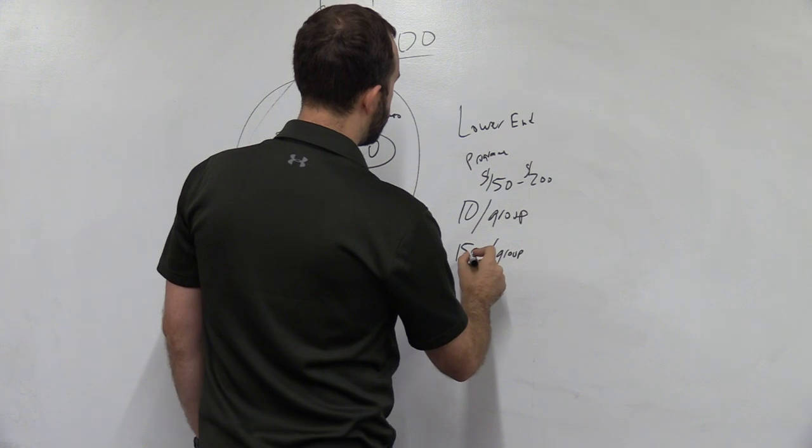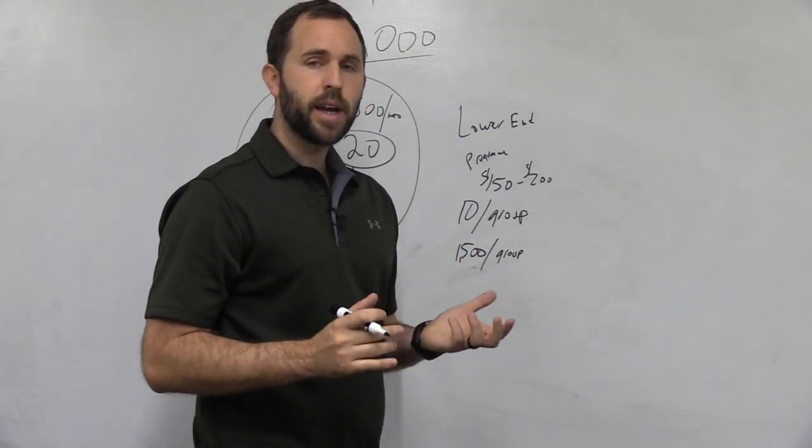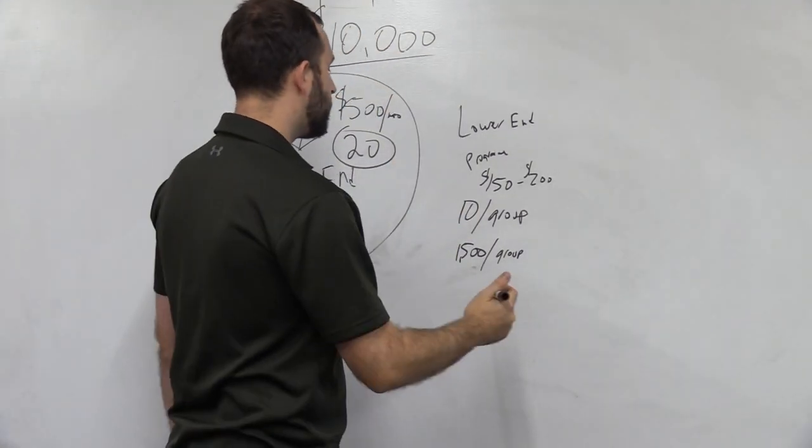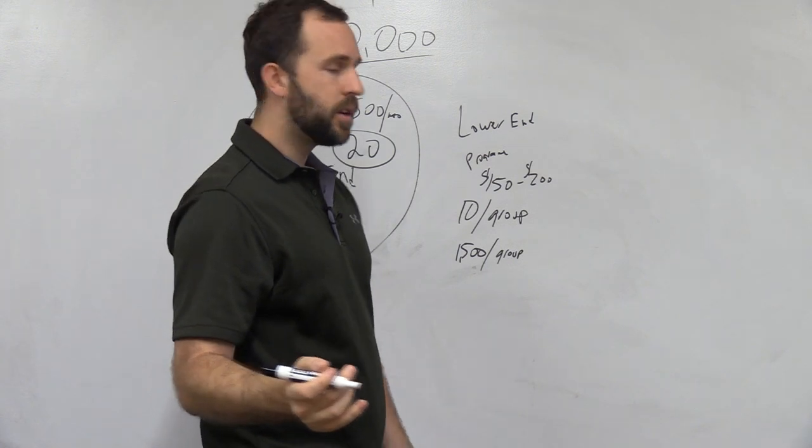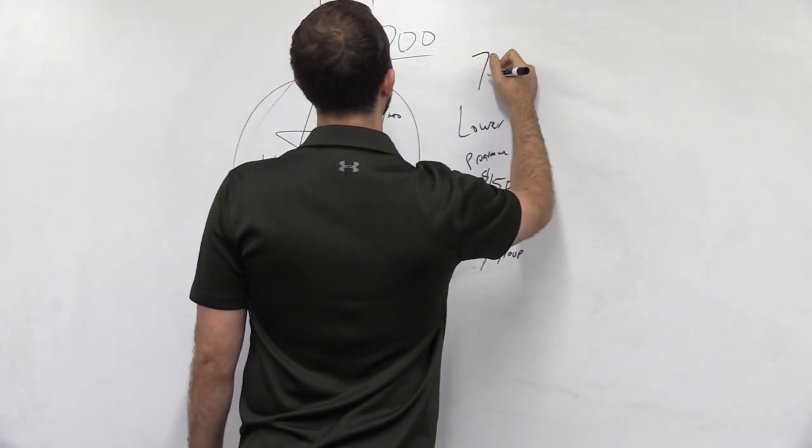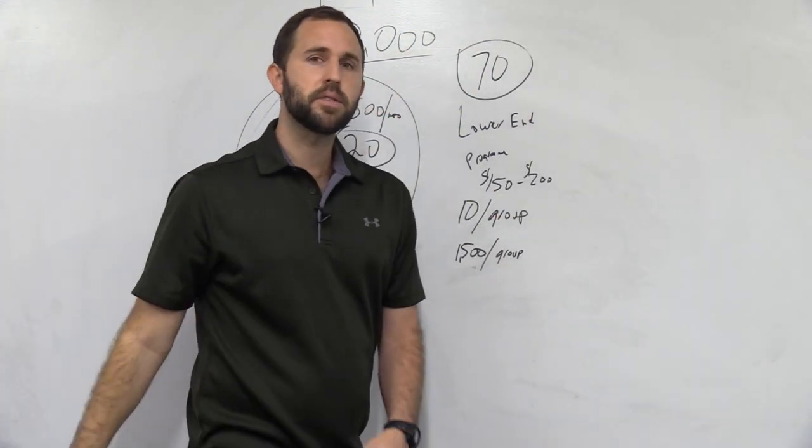And if we break that down, we need to say, well, how many groups do I need to have to get past $10,000? And the answer is going to be seven groups. Just take out the calculator. So you need seven groups, which means you need 70 clients.